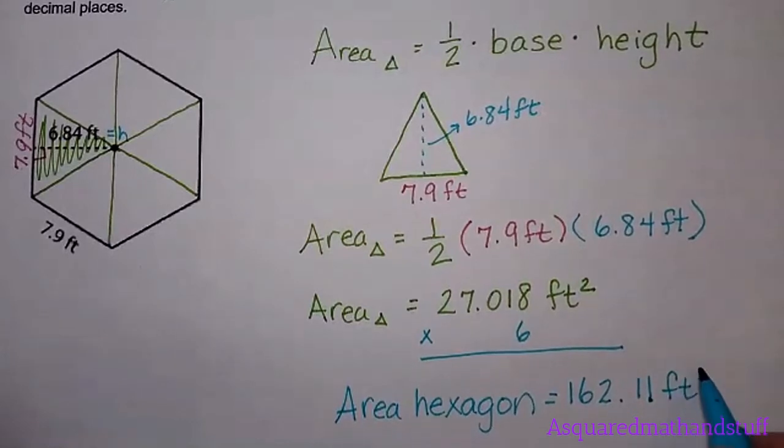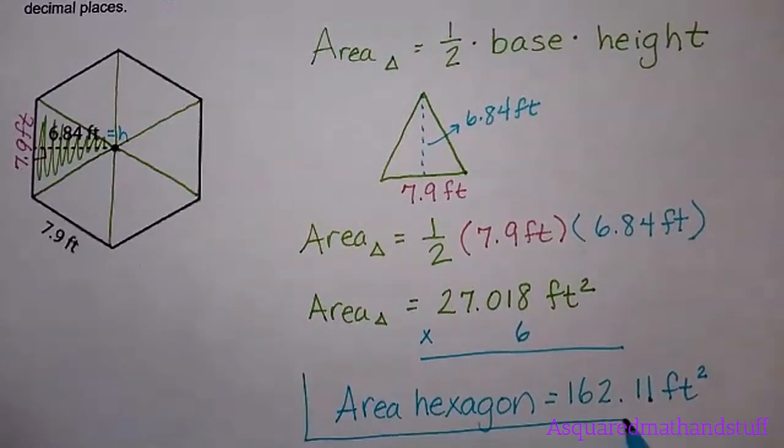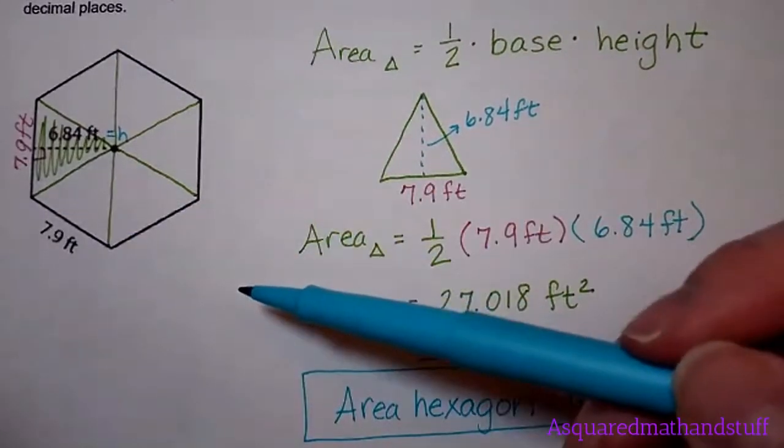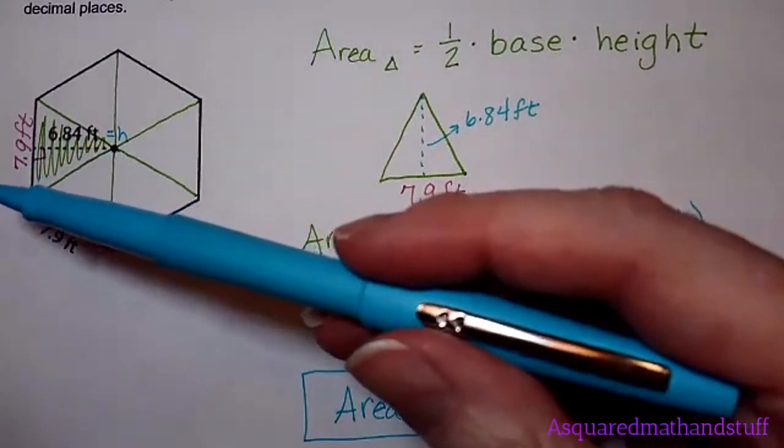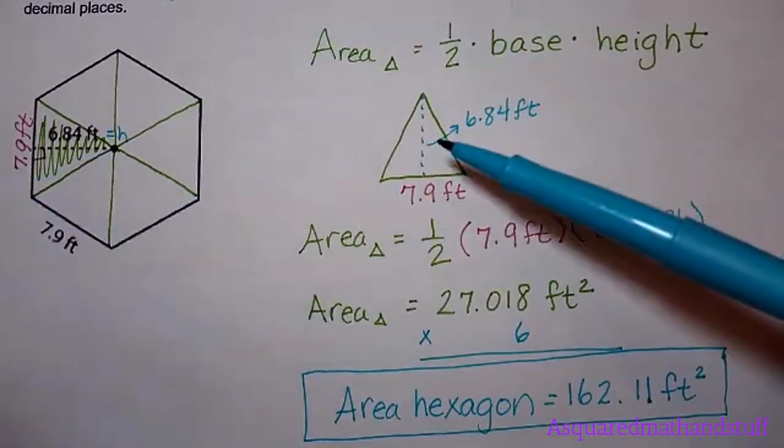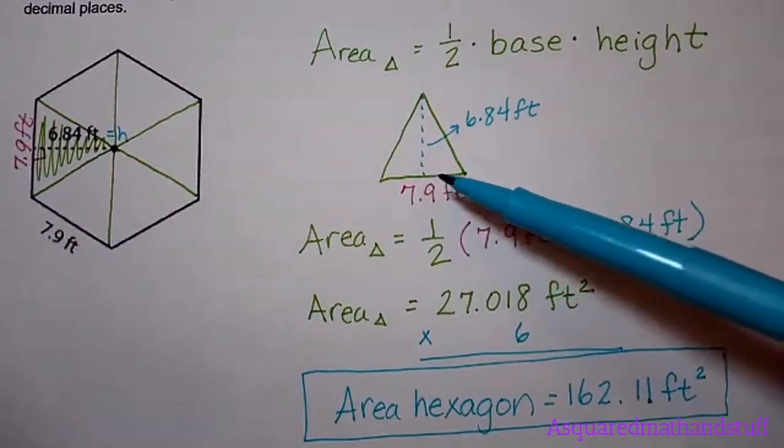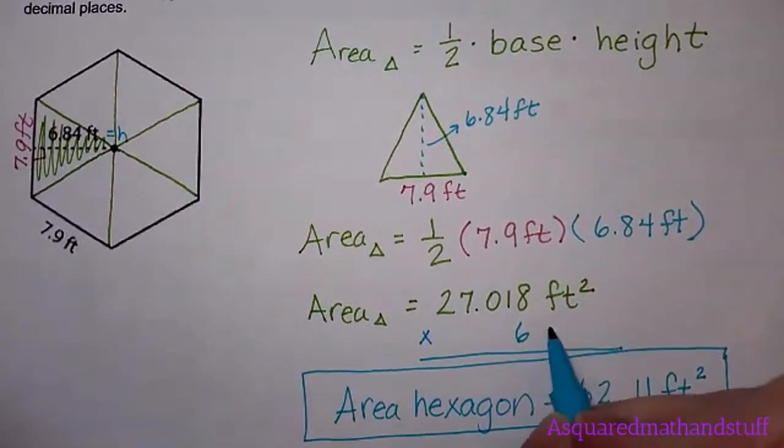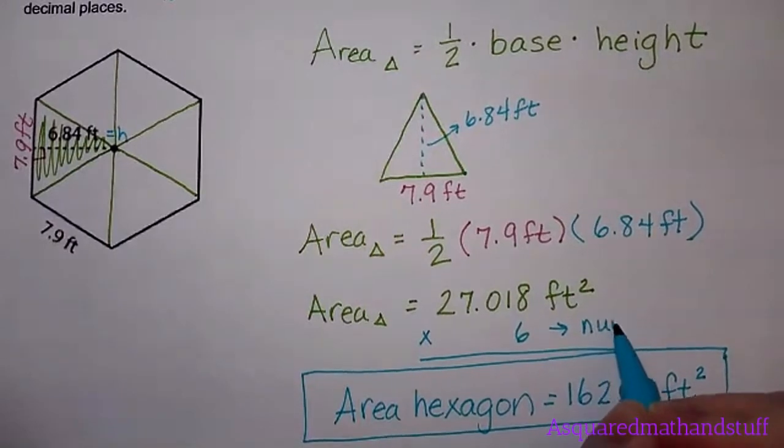So just to refresh, we had a regular polygon. We were given the height and a base or the side length. We figured out the area of a triangle, multiplied that by the number of sides, and we were able to calculate the area of the total polygon.